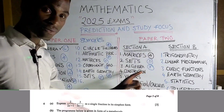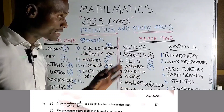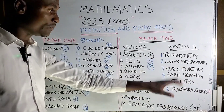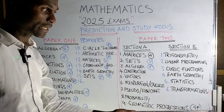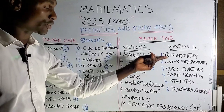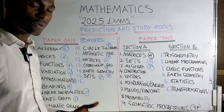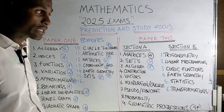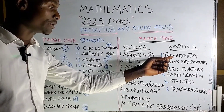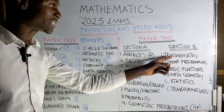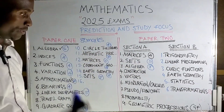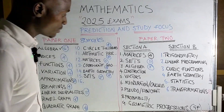Sometimes the three-mark algebra question can appear in section B attached to another question — usually trigonometry or cubic function. Wherever you find it, if you've selected trigonometry and the algebra question comes with it, make sure you answer it as well.